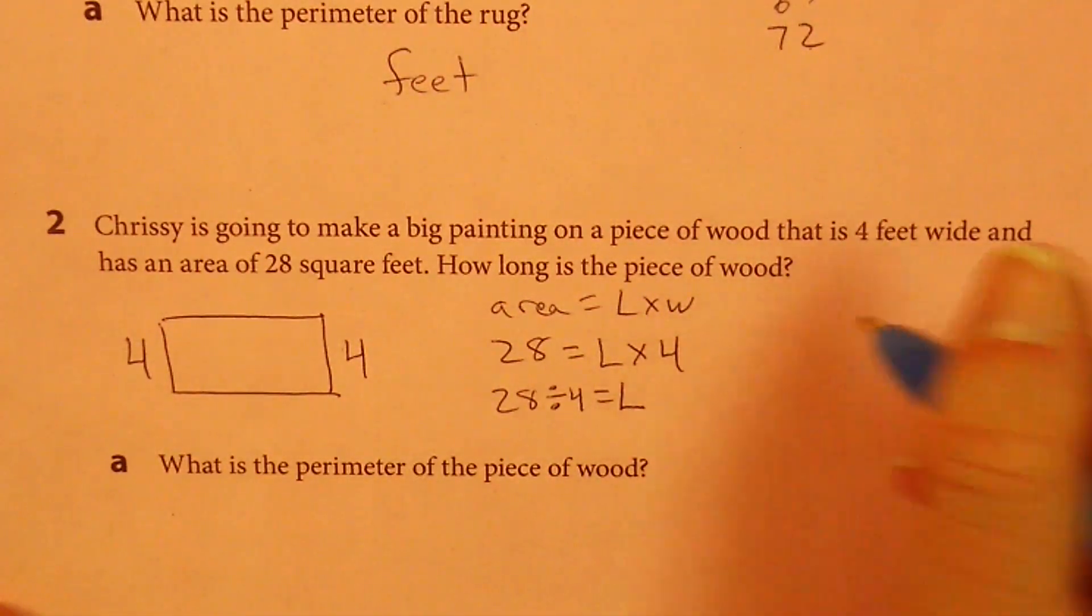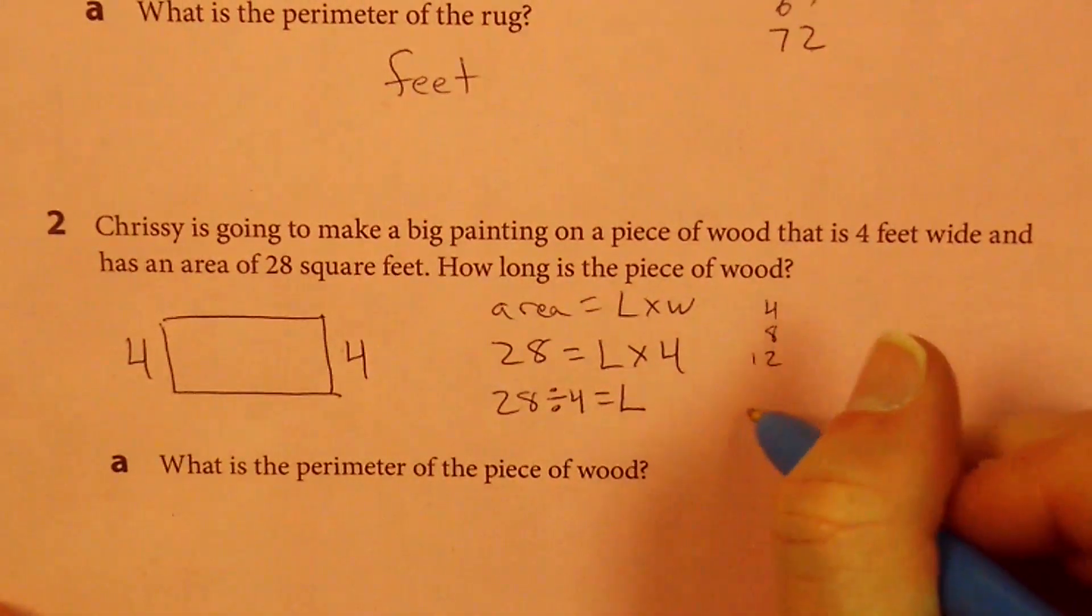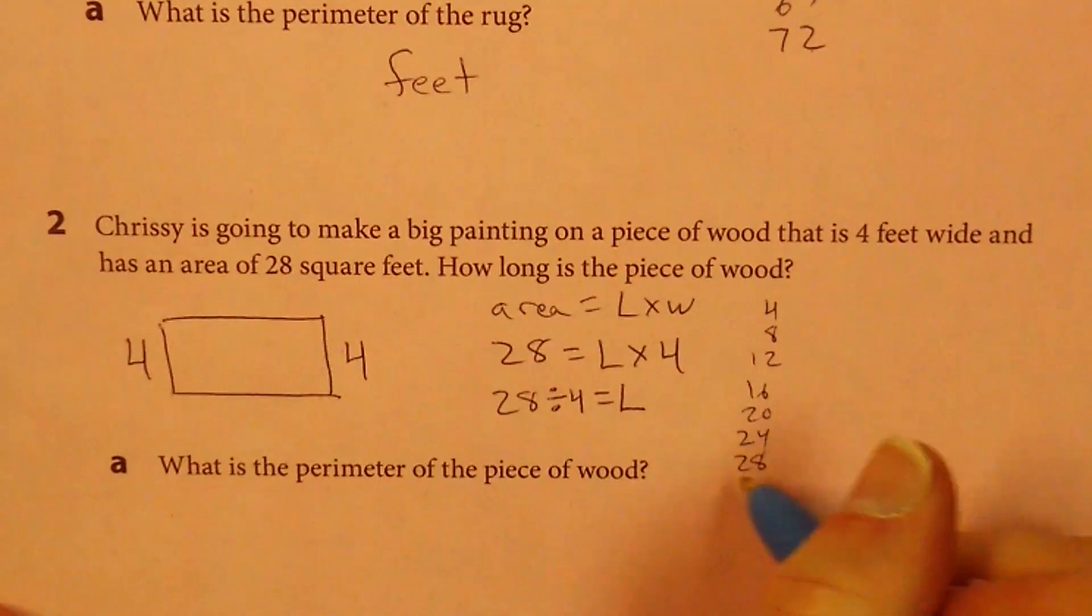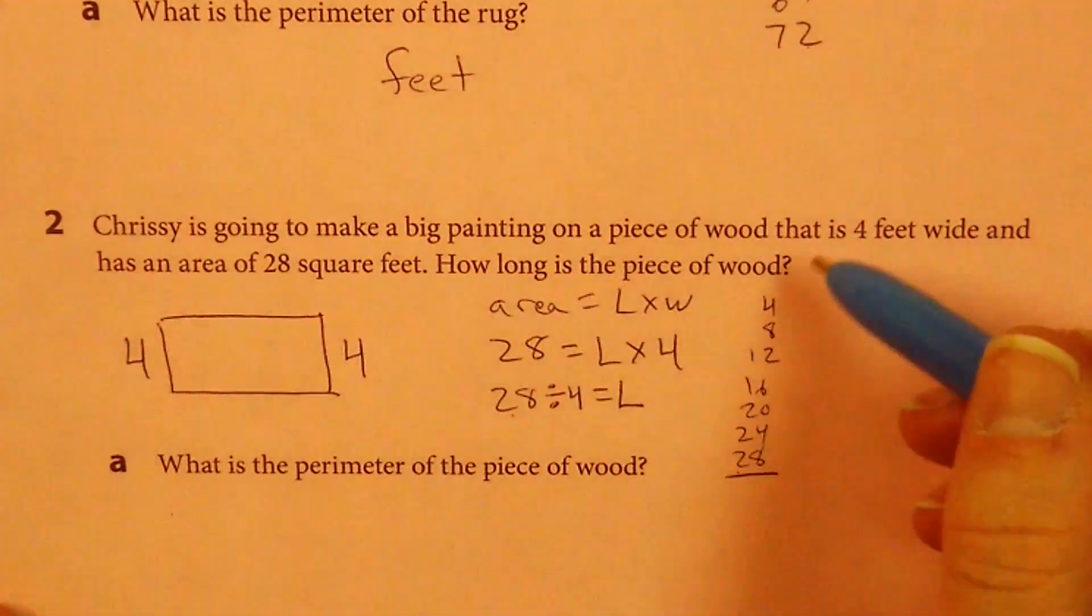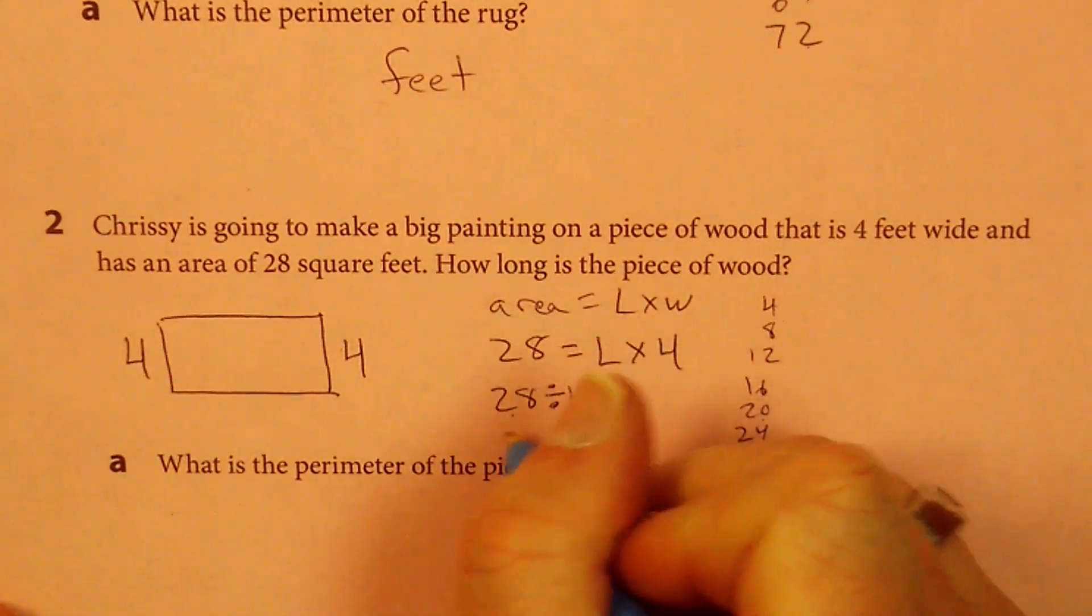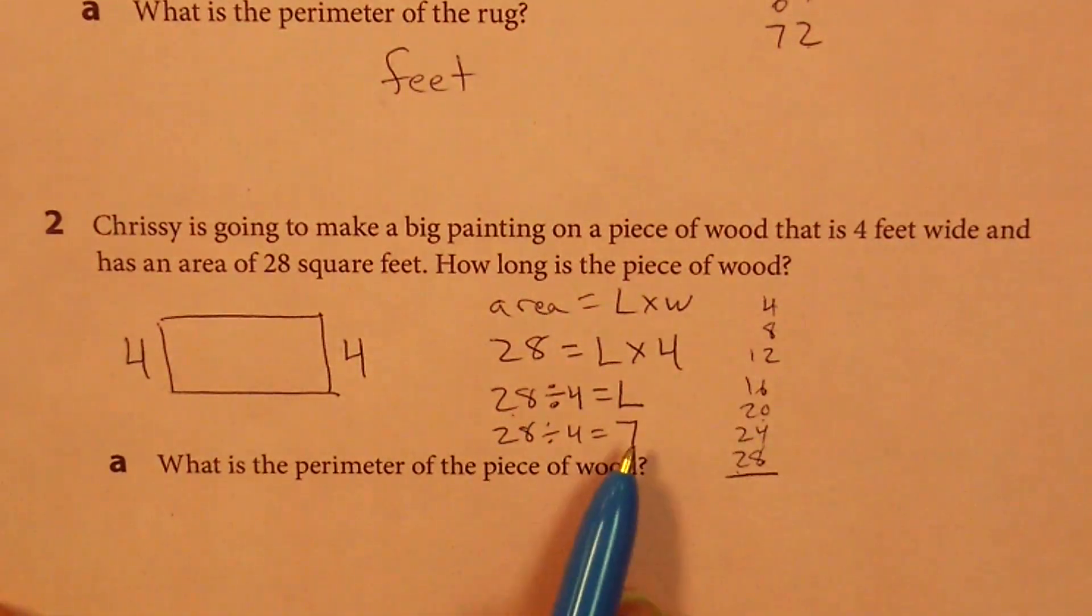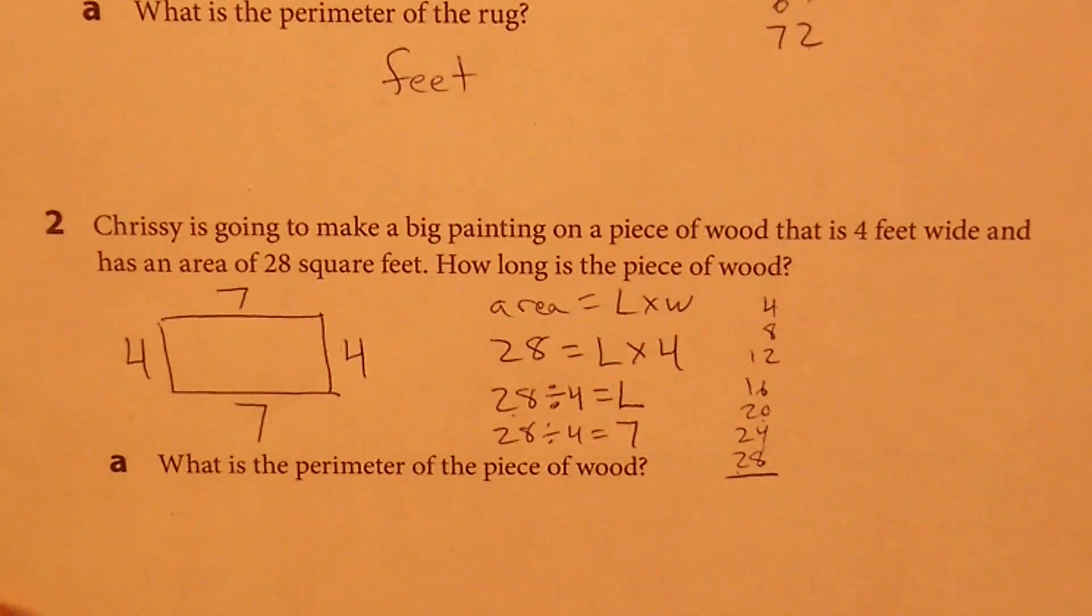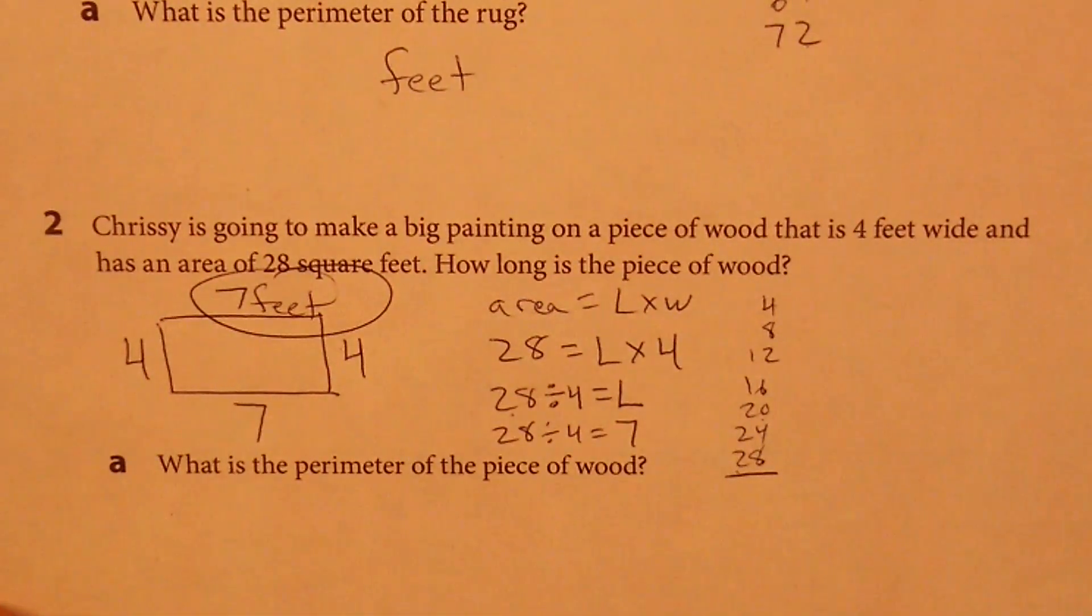You could count by 4s. 4, you could say 4 times what is 28. You could say 4, 8, 12, 16, 20, 24, 28. And then when you get to the answer, that should be the number of groups you need, because we're counting by 4s. 1, 2, 3, 4, 5, 6, 7. So 28 divided by 4 is 7. The length is 7. 7 what? 7 feet. Make sure you label it that way.